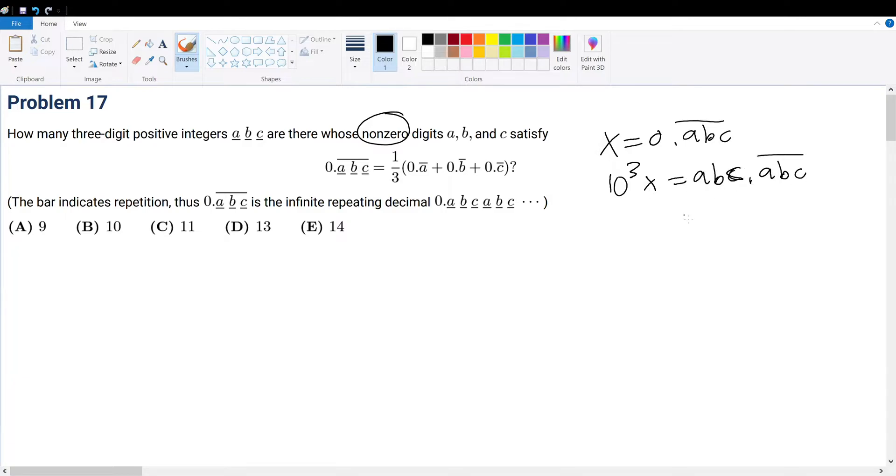And so with this information, what can we say? We can say this minus that. Well, that means 999X is the same thing as ABC. So that means X is the same thing as ABC over 999.